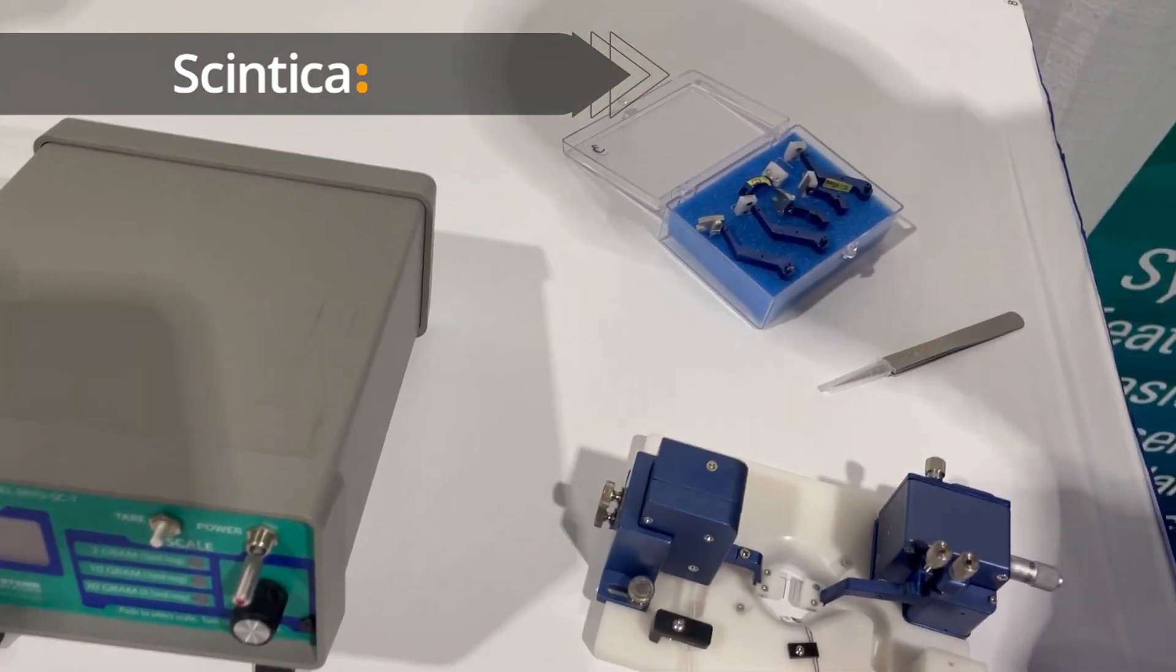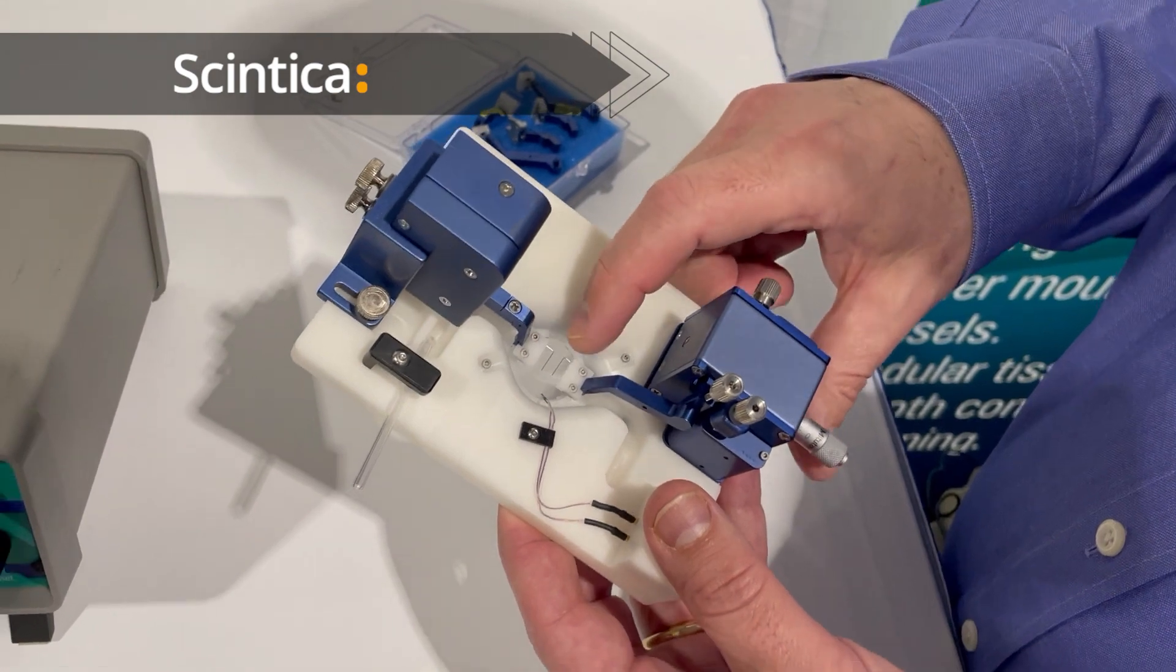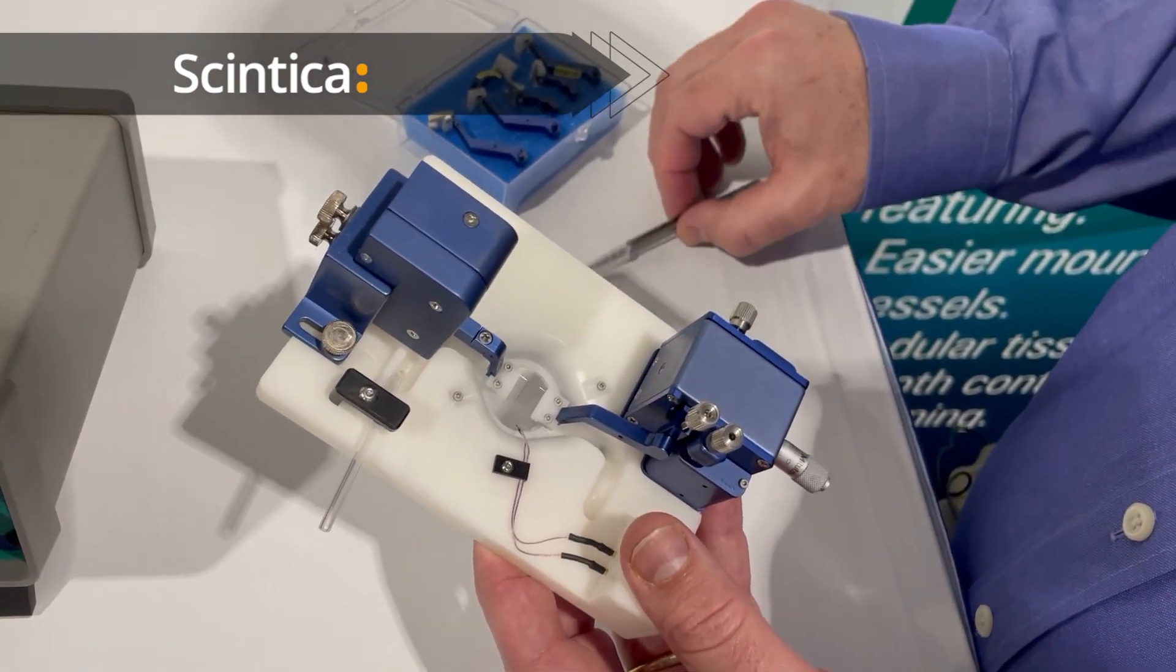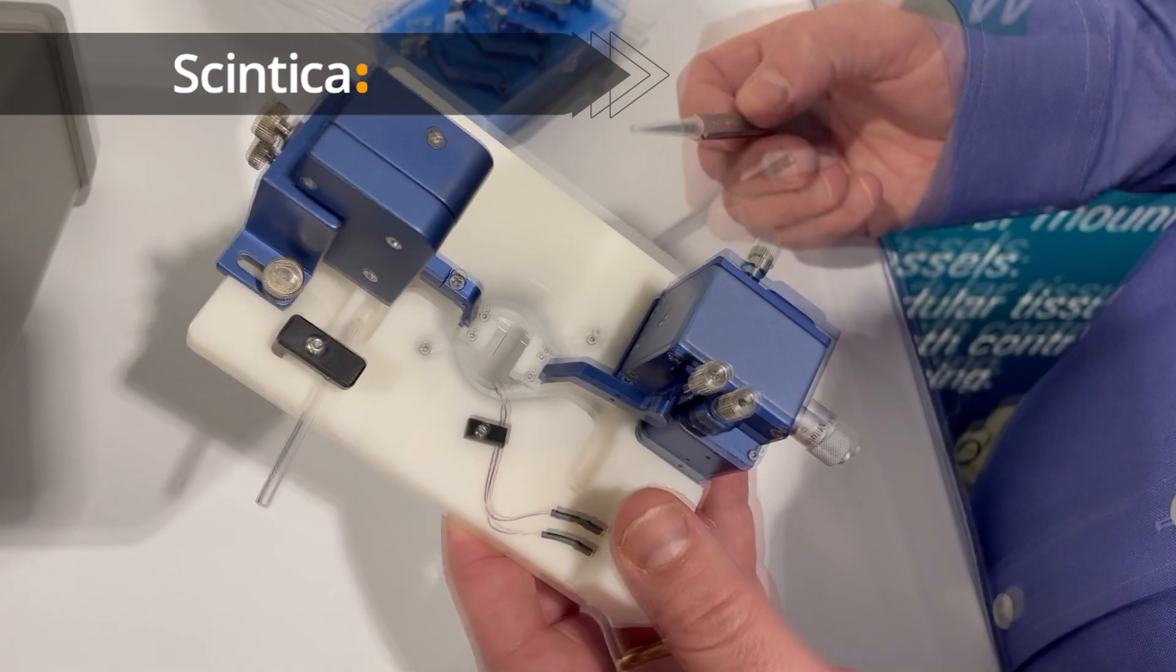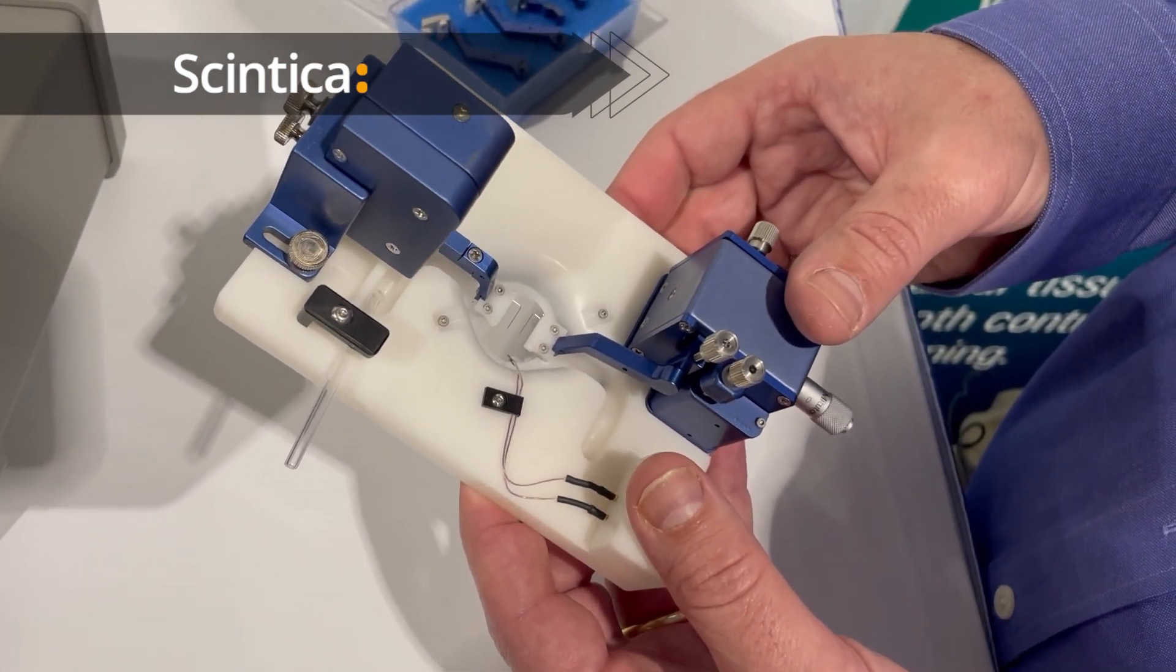We have the bath fitted with our L bars for our ring preparations. But these modular arms can be easily removed. The one on the force transducer is removed with a Phillips screwdriver that comes with the bath.